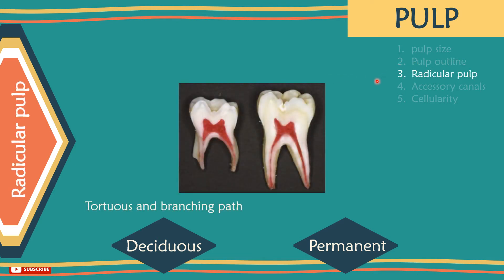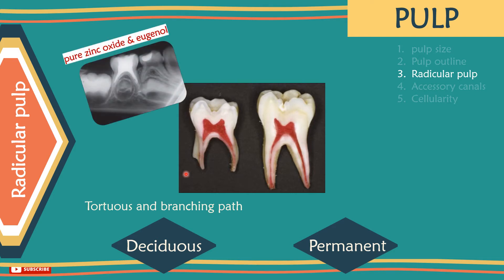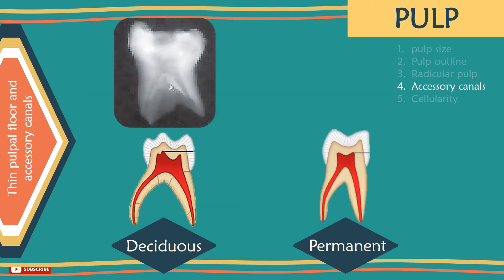The root canal follows a tortuous and branching path, making complete cleansing and preparation of the root canal system almost impossible, although instrumenting canals is often easier than suggested in some cases. As the roots resorb in primary teeth, a different approach to root canal treatment is needed. Pure zinc oxide eugenol is the obturation material of choice in primary dentition, so it can resorb naturally with physiological root resorption, unlike gutta-percha and other plastic materials used in filling permanent roots. Accessory canals could be numerous in the furcation area of primary molars, which may explain the greater incidence of interradicular involvement following pulp death.